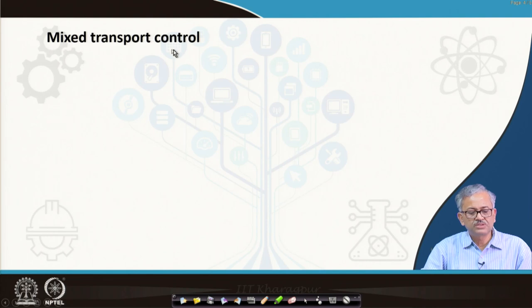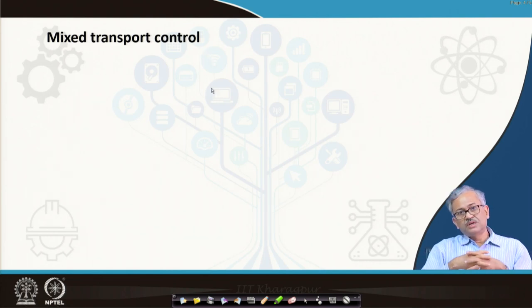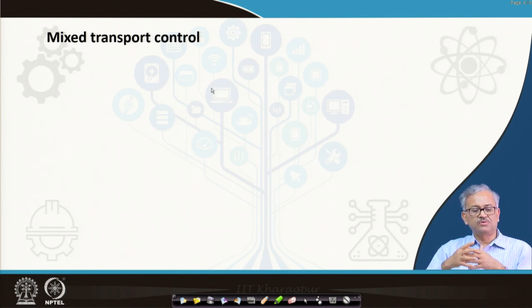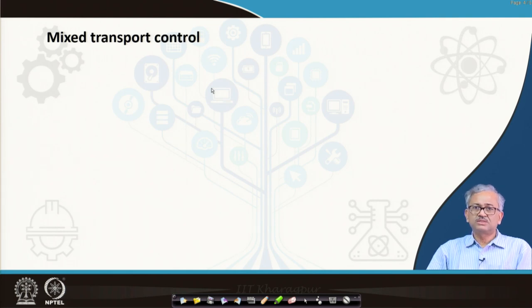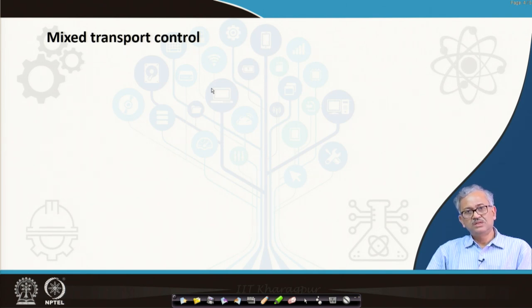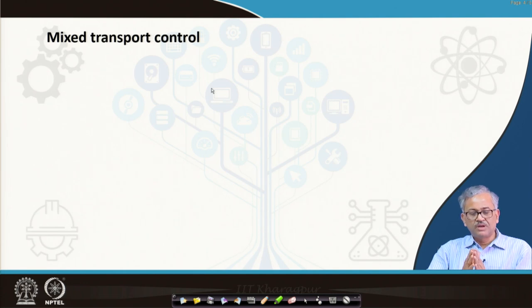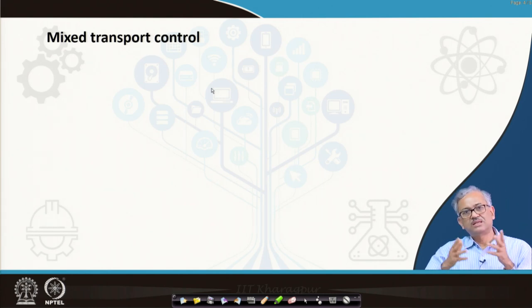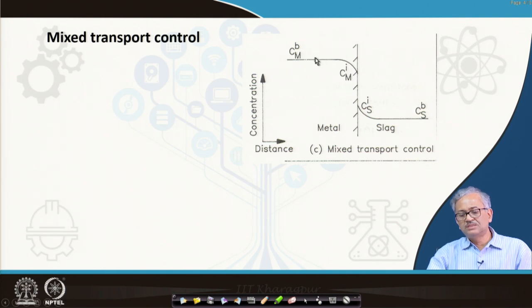Focusing on the mixed control system: slag-metal impurity transfer is usually mass transfer controlled — either metal side or mixed mass transport control — because at steelmaking temperature of 1600°C, the activation energy barrier for chemical reaction is very low and the interface reaction is very fast. Therefore, mass transport of species through the concentration boundary layers on both the metal and slag sides controls the process.